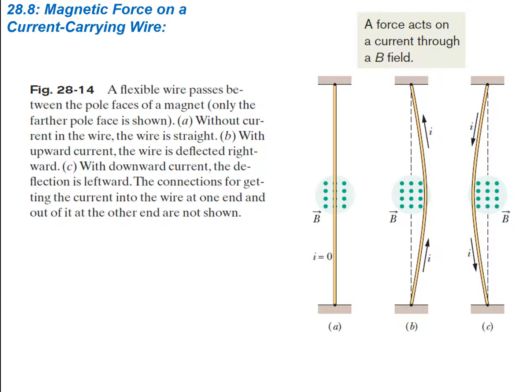In the figures, we have a flexible wire that passes between the pole faces of a magnet. Only the farther pole face is shown. Without current in the wire, the wire is going to be straight. You can pass a magnetic field through the wire, but if there's no current, if there's no moving charge, then you're not going to have a force.